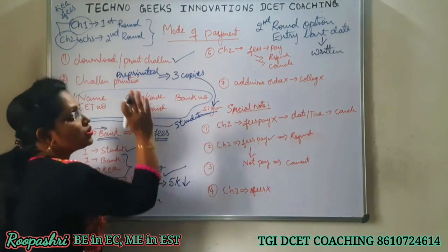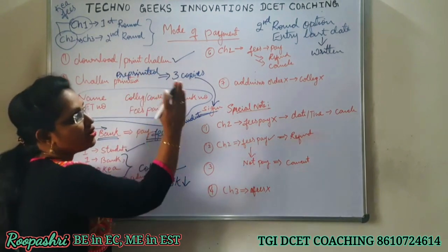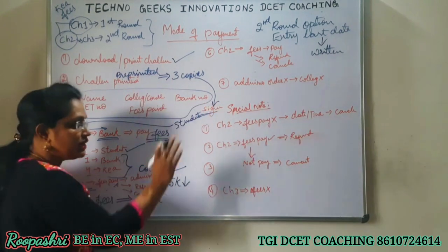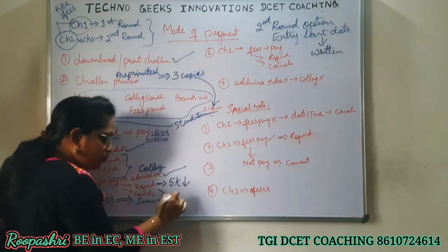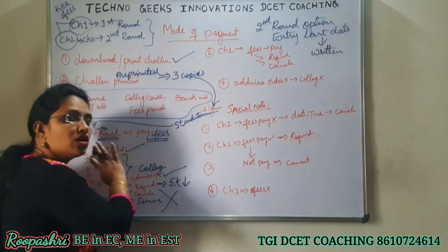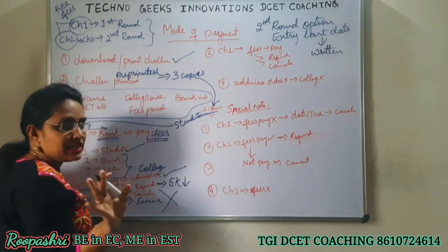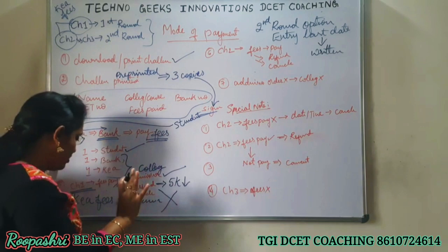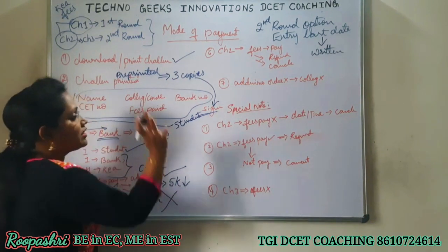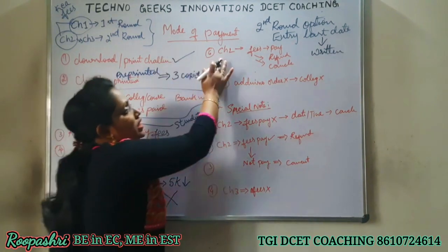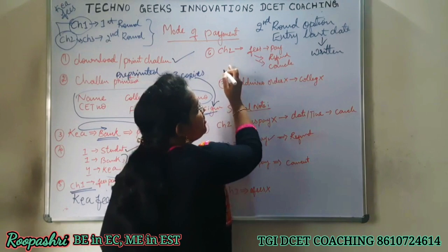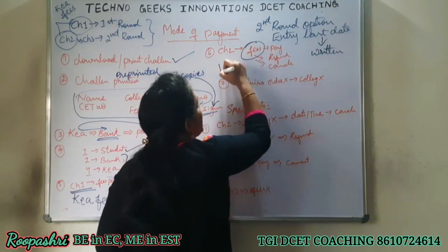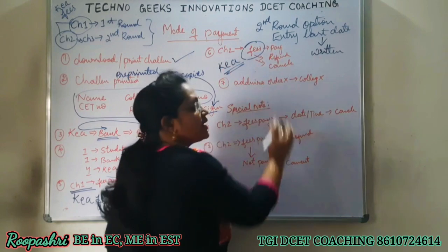Suppose after the second round option entry last date has passed, if you proceed at that time, your complete paid fees will be cancelled. So you won't get anything back - there will be a loss. So if choice 2 is selected and fees are paid, on the specified date and time, the fees must be paid to K.E.A.